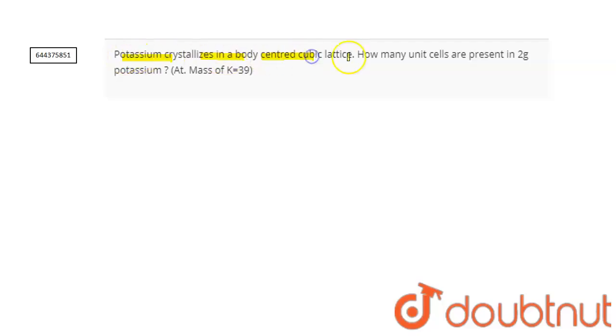And the atomic mass of potassium is 39. So as we know, potassium crystallized in a body-centered cubic unit lattice, means potassium is present in BCC body-centered cubic lattice.